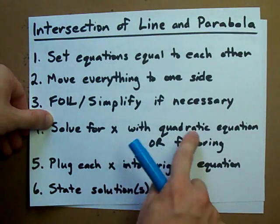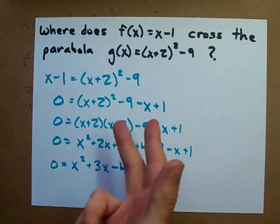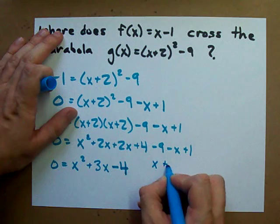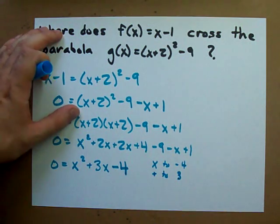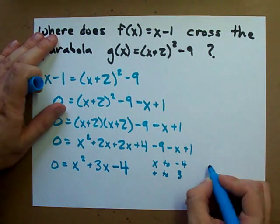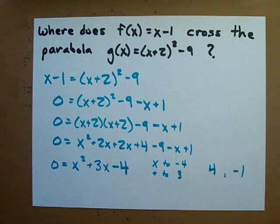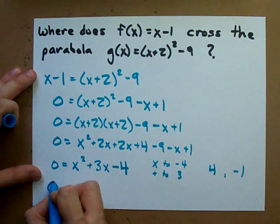Solve for x with quadratic equation or factoring. Sure, you could use the quadratic equation, but you can also factor it if you can find two numbers that multiply to negative 4 and add to positive 3. Oh, hey, I know what those numbers are. It's positive 4 and negative 1. Multiply to negative 4, add to 3.